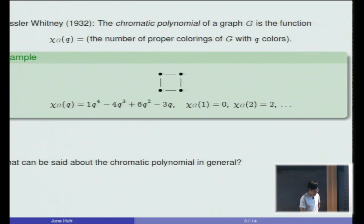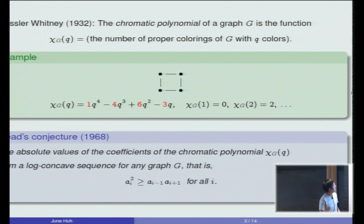So what can be said about chromatic polynomials in general? The expectation was that if you look at the coefficients of the chromatic polynomial, which is 1, -4, 6, -3 in this case, then they should always satisfy this quadratic inequality: a_i squared should be larger than the product of the adjacent coefficients a_{i-1} times a_{i+1}. As we all know, graph theory is capable of producing many hard conjectures, but I was particularly attracted to this one because it has a somewhat different feeling.